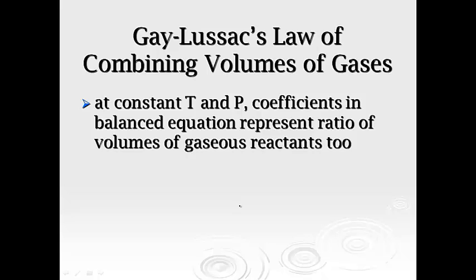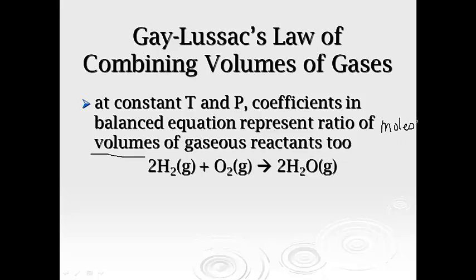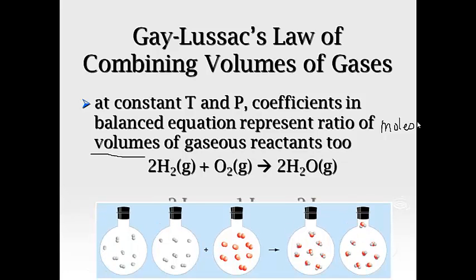Now Gay-Lussac's Law of Combining Volumes of Gases states that at constant temperature and pressure, coefficients in the balanced equation represent a ratio of volumes of gaseous reactants as well. We've had balanced chemical reactions represent a ratio of moles this entire time, but it can also be a ratio of volume. So for example, if you just use the coefficients here, you've got a 2. It means if you had 2 liters of hydrogen, you combine it with 1 liter of oxygen, you'd get 2 liters of water. So we also can use them as volume ratios.